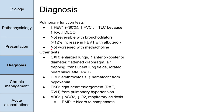Comparing to asthma, lung function tests are not worsened with acetylcholine as they would be in asthma. On chest x-ray, you'll see enlarged lungs, increased anterior-posterior diameter, a flattened diaphragm, air trapping, translucent lung fields, and a rotated heart silhouette from right ventricular hypertrophy due to cor pulmonale.